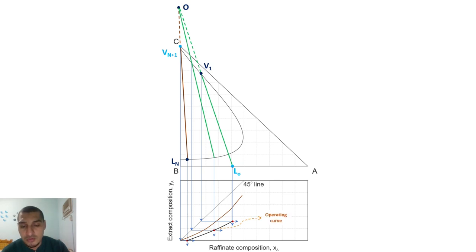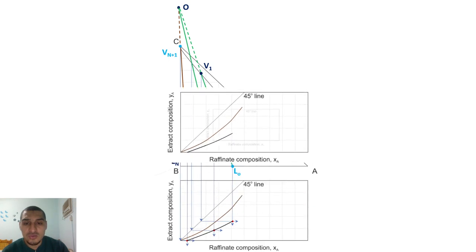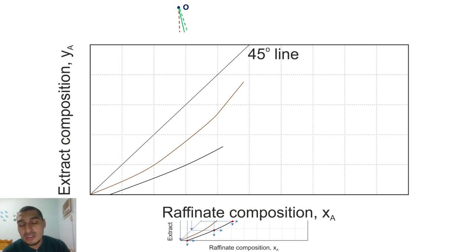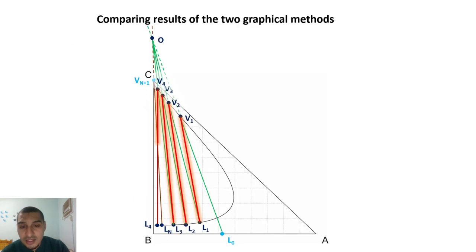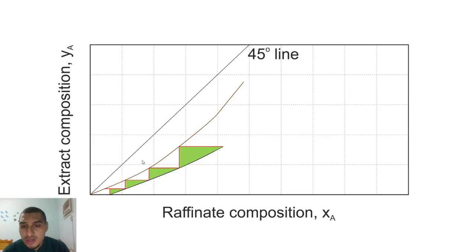Now we have the operating line and the equilibrium curve on the XY diagram, and we no longer use the ternary diagram. This is exactly what we do in distillation: the operating line lies below the equilibrium curve, and we count the number of stages by drawing the staircase steps. The result here is one, two, three, and almost half a stage — the same result obtained using the ternary diagram directly. Both methods give the same answer. In the next video, we will see how to do this in Microsoft Excel.